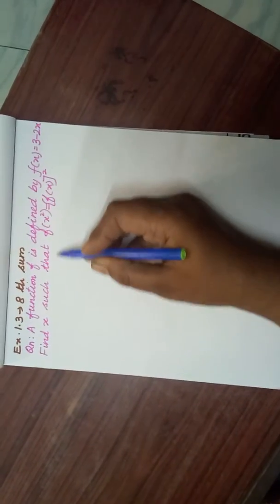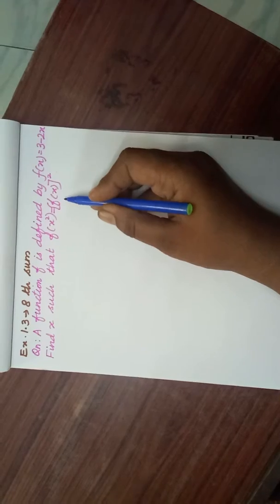Exercise 1.3 Q8: A function f is defined by f(x) = 3 - 2x. Find x such that f(x²) = [f(x)]².